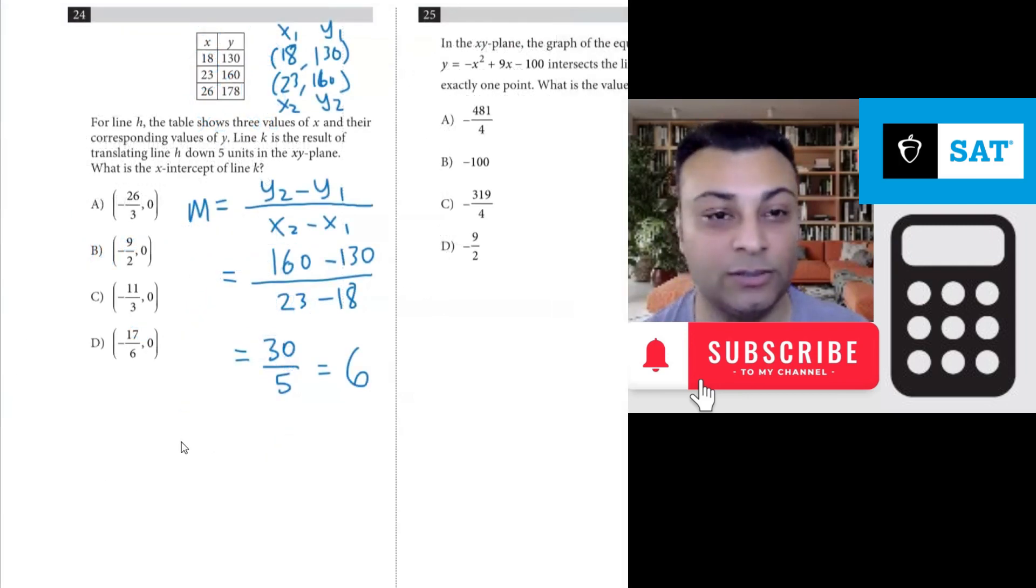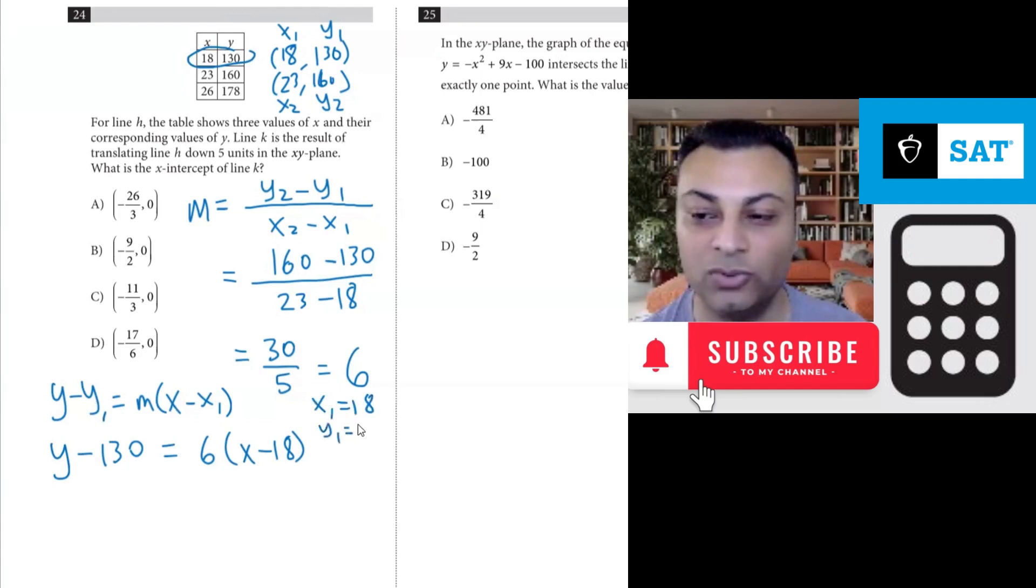Okay, what about the rest of the equation? We know the slope. So we could use point slope, which is Y minus Y1 equals M times X minus X1. And I'll use it with this 18 and 130. So let me go Y minus 130 equals the slope of 6, X minus 18. This Y1 became 130, this X1 became 18. And so that's how we have this equation in point slope form.